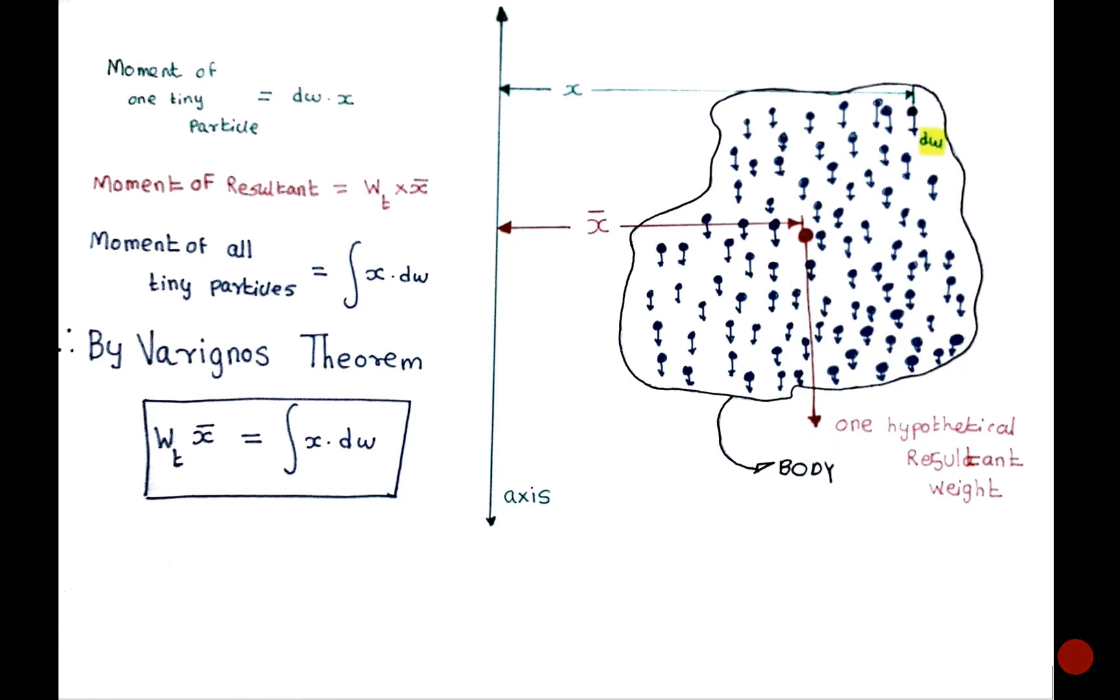And by Varignon's theorem, which states that the moment of the resultant force is equal to the sum of the moments produced by the component forces, we can write this equation. That is, the moment produced by this resultant hypothetical weight will be equal to the moment produced by all these tiny particles.